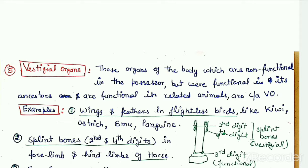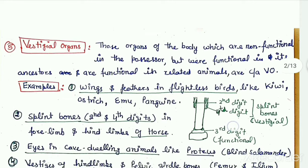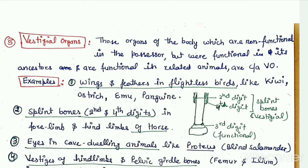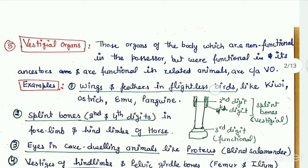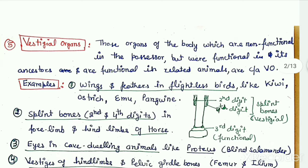Many examples of vestigial organs are there. Some of them include, for example, wings and feathers in the flightless birds. Flightless birds like ostrich, kiwi, emu, etc. — these organisms cannot fly, but still they have wings and feathers like all other birds.